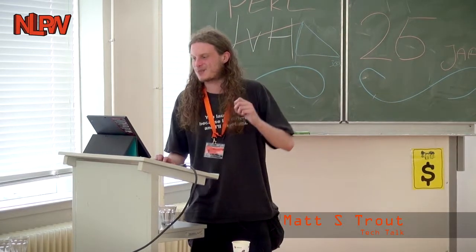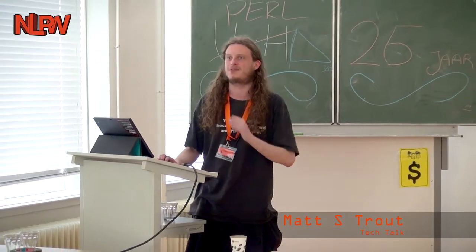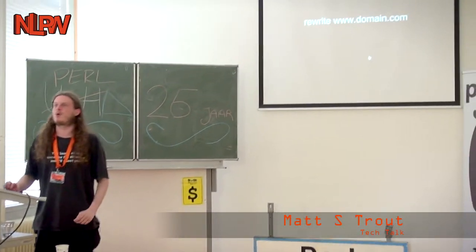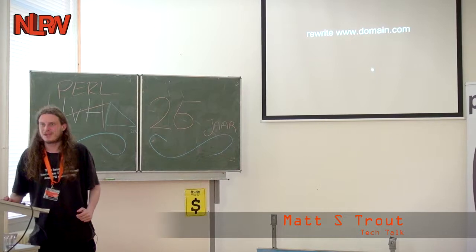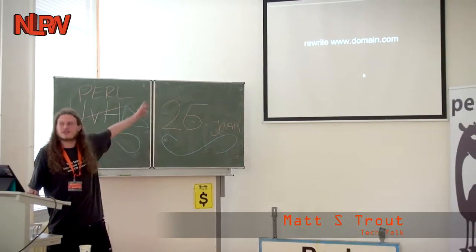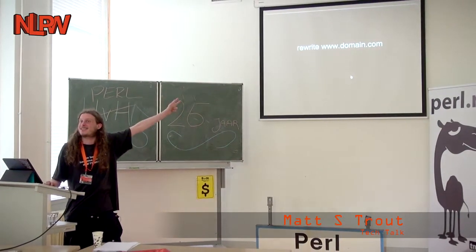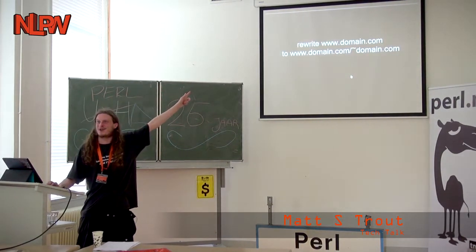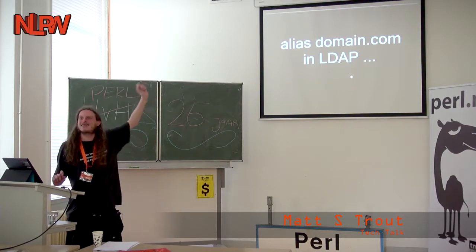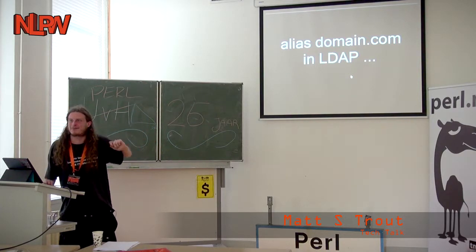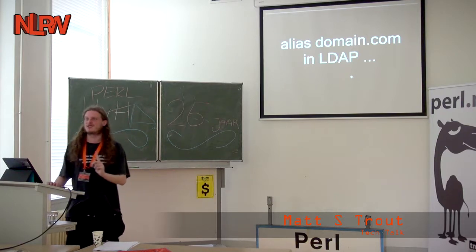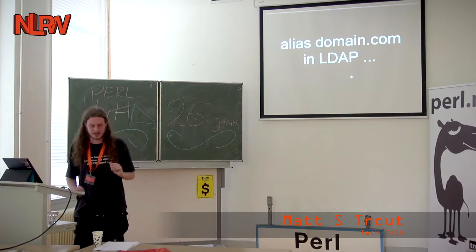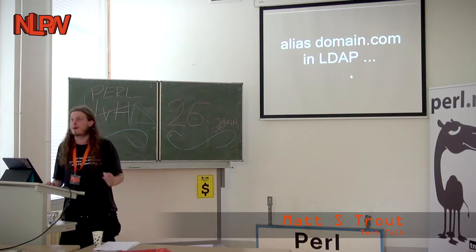The solution was: what about mod_userdir then? Breakout mode rewrite — because what could possibly go wrong? What you do is, when you get a request for domain.com that needs to hit the CGI, you rewrite it internally to /~domain.com, and then alias domain.com to their primary FTP user in LDAP. Then the CGI runs as the right user. This was in production for several years, and I'm not sure whether I'm proud or scared of it — probably both.